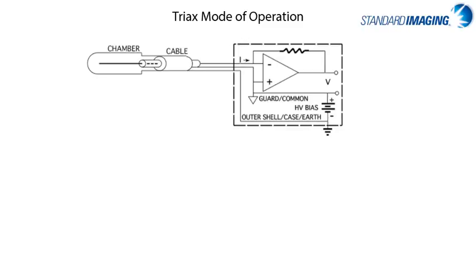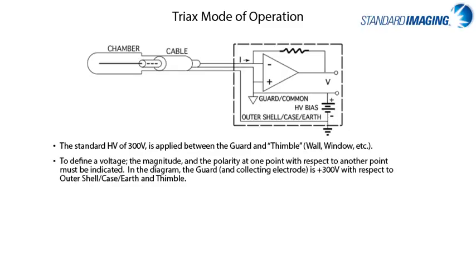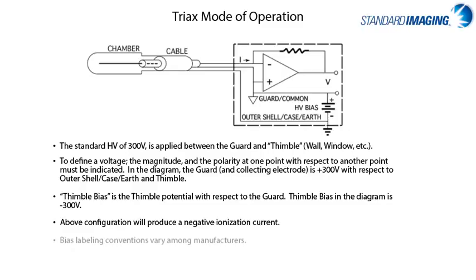Putting this all together, considering the chamber, cable, and electrometer as a system: the standard high voltage of 300 volts is applied between the guard and the thimble. To define a voltage, both magnitude and polarity must be indicated. In this configuration, the guard and collecting electrode are at +300 volts with respect to the outer shell, casing, earth, and thimble. Thimble bias — the thimble potential with respect to the guard — is at -300 volts. This configuration produces a negative ionization current, though this varies between manufacturers. With Standard Imaging electrometers, when a negative bias is applied, there is a negative charge on the collector and positive ions are collected.